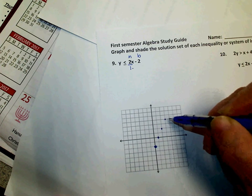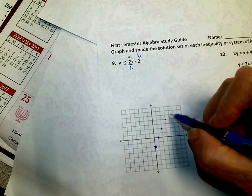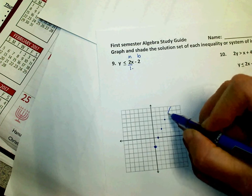So since the less than sign has the or equal to symbol under it, this is a solid line as opposed to dotted.